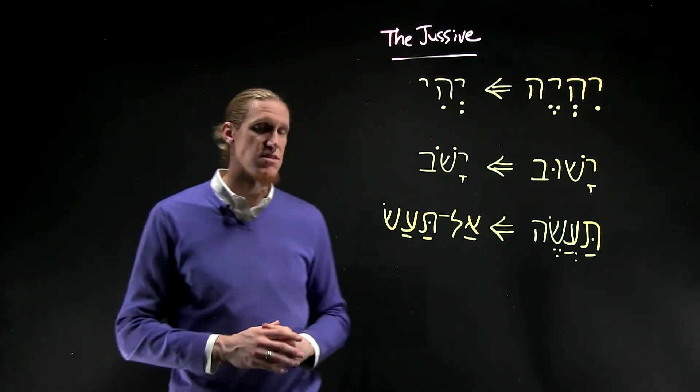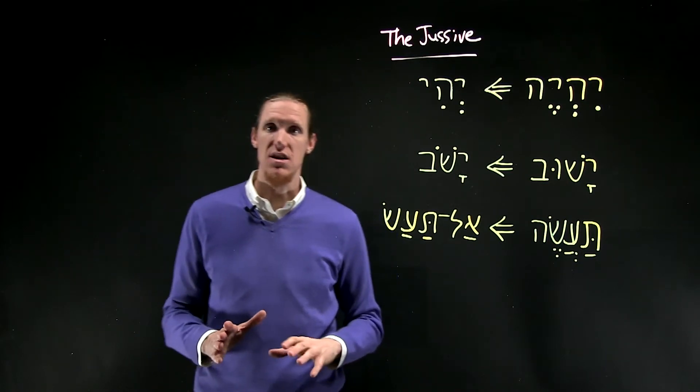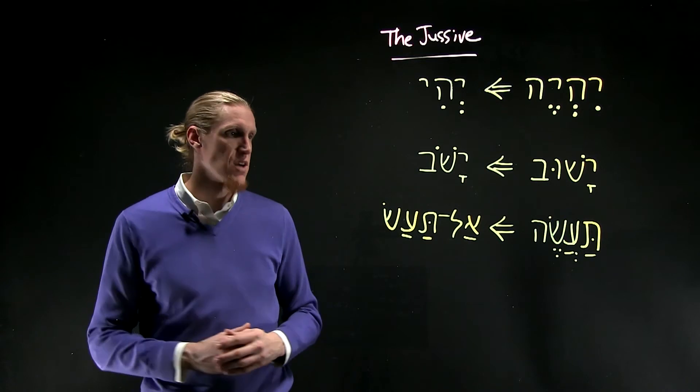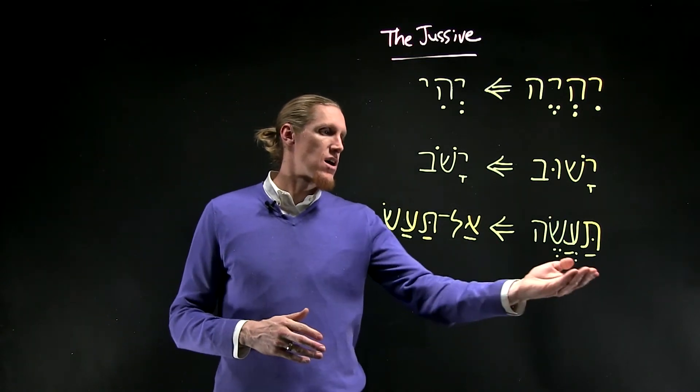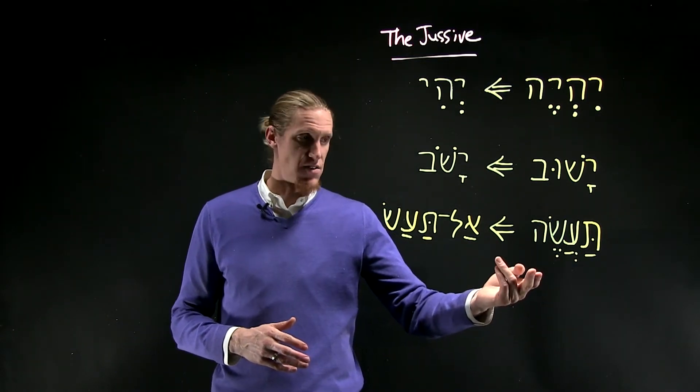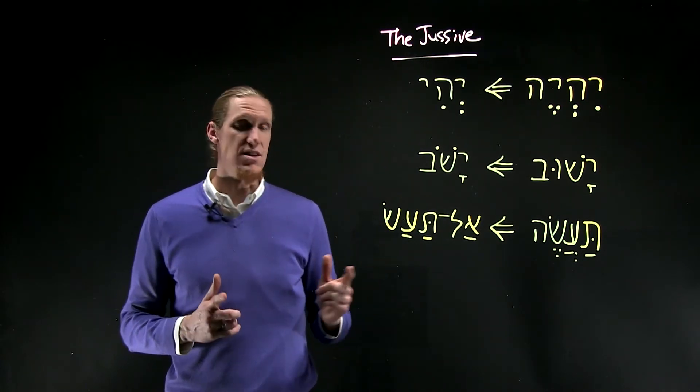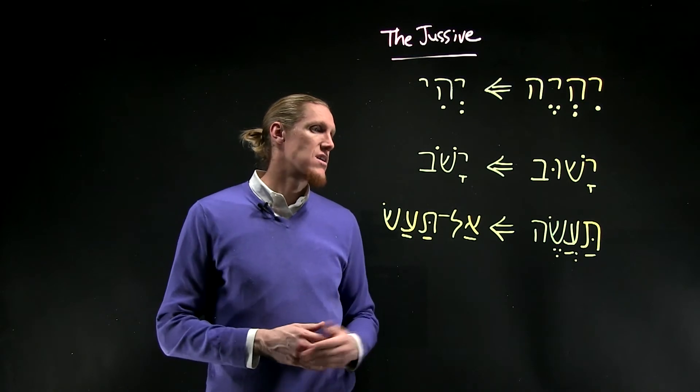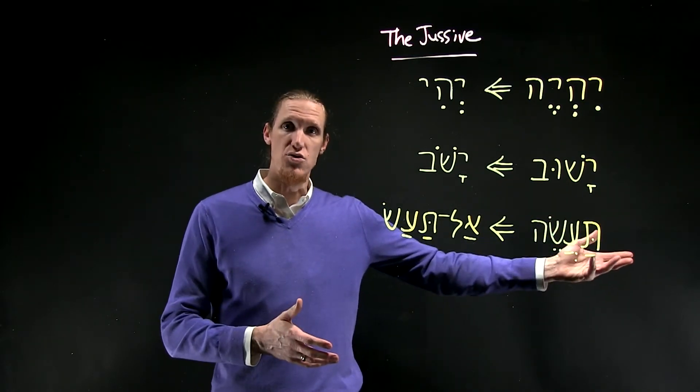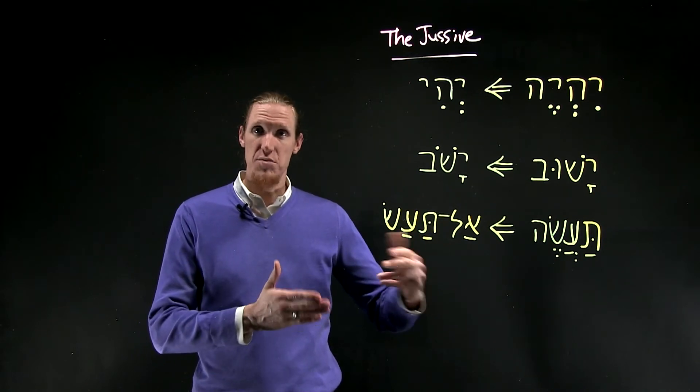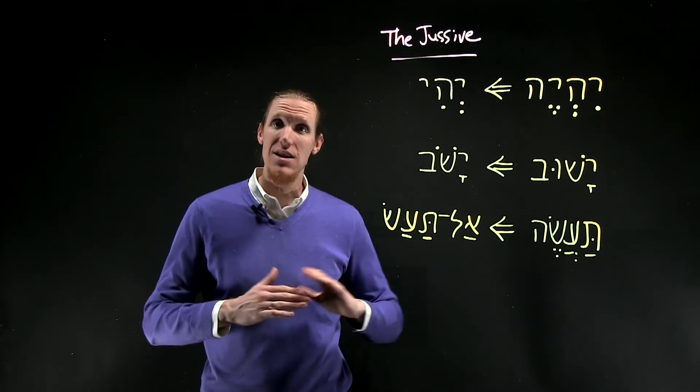And here we have a simple prohibition, which is the negative jussive. And this usually is in the second person. And ta'ase is our example, ta'ase from the root ayin-sin-he, to do or to make. Ta'ase is you will do.